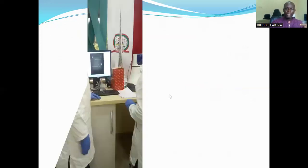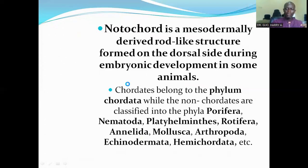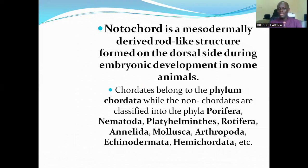I want to look at another feature for the classification of animals, which is the presence or absence of notochord. Notochord is a mesodermally derived rod-like structure formed on the dorsal side during embryonic development in some animals. Chordates belong to the phylum Chordata, while the non-chordates are classified into the phyla Porifera, Nematoda, Acoelomorpha, Rotifera, Annelida, Mollusca, Arthropoda, Echinodermata, and Hemichordata, and many others. The possession of notochord is a distinctive feature used to classify organisms into non-chordates and chordates.